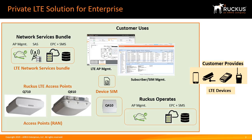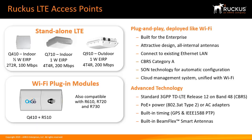In this model, the customer buys one bundle per AP and obtains the needed devices to set up their own private LTE network. There is a license fee applicable to the network services bundle offered in one-, three-, and five-year increments. Our LTE APs are the indoor Q710 and the outdoor Q910. Both are dual-radio products, so they have twice the capacity and can handle up to 40 MHz of spectrum or about 200 Mbps of traffic.